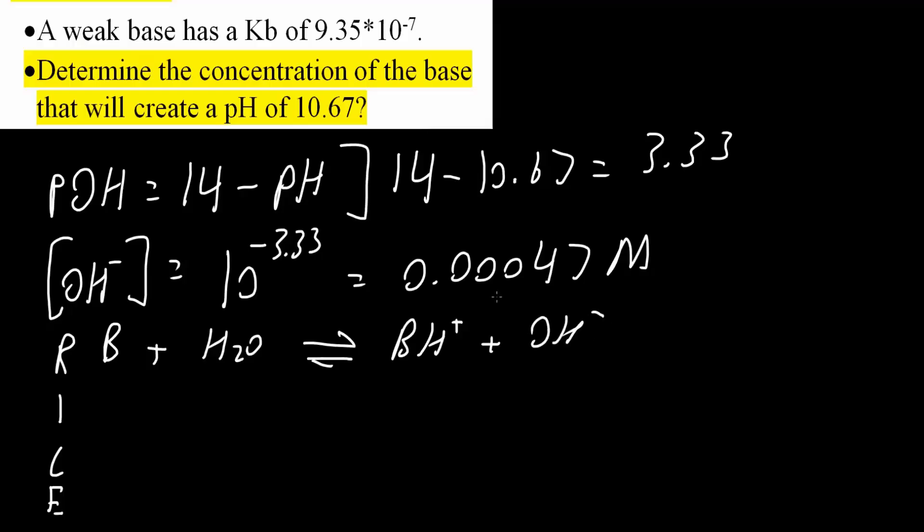We want to determine the concentration of the base that will create this. So we say that this will be X for the initial condition. H2O is always blank. And BH plus plus OH minus, so BH plus and OH minus are our products, so they would be 0 and 0.